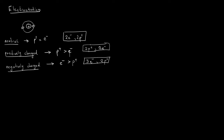So how do we turn a neutral atom into a positively or negatively charged one? Take an atom of magnesium from the periodic table — it has 11 protons and 11 electrons. For it to be positively charged it needs more protons than electrons, and for it to be negatively charged it needs more electrons than protons.